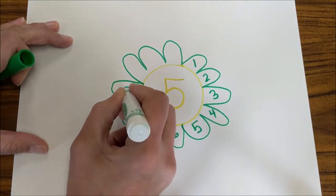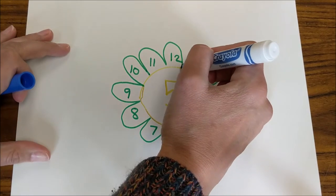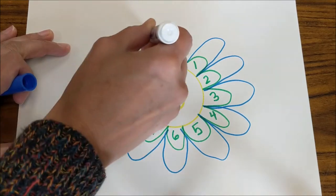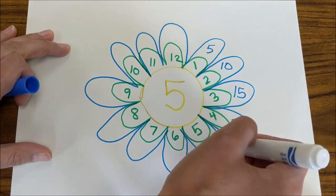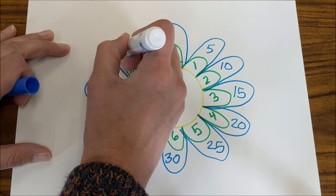I think I'll use blue for my next set of petals. Count by fives: 5, 10, 15, 20, 25, 30, 35, 40, 45, 50, 55, and 60.